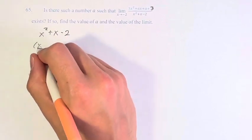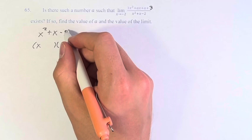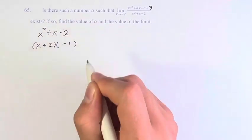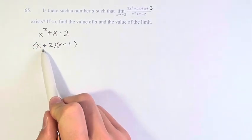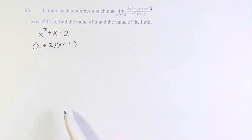If we factor this, we factor a trinomial, these numbers need to multiply to negative 2 and add to 1. That's going to be positive 2 and negative 1. If we plug in negative 2 here, this is going to be negative 2 plus 2. This is 0. Therefore, this whole thing is 0. Therefore, we're dividing by 0.